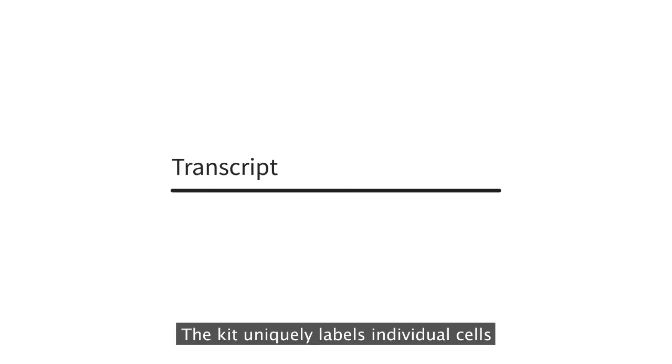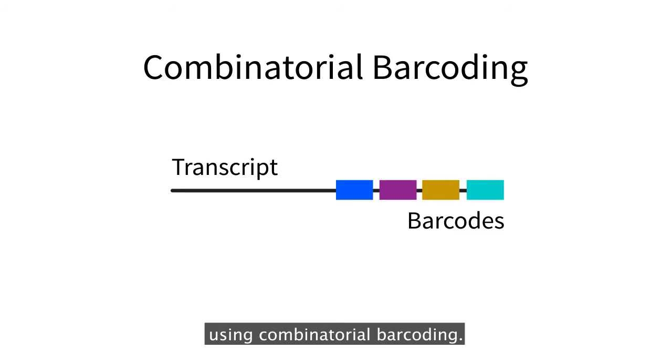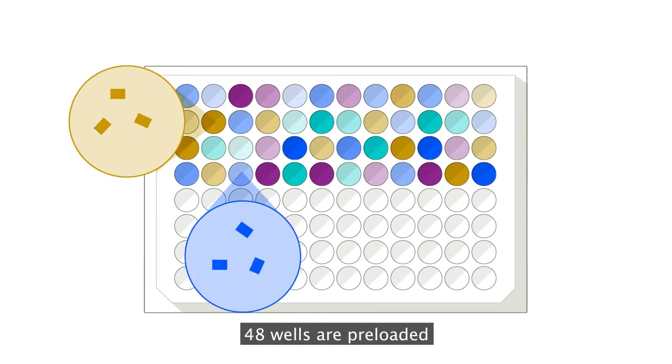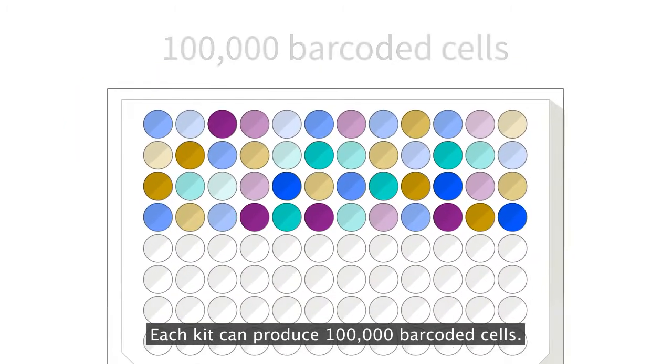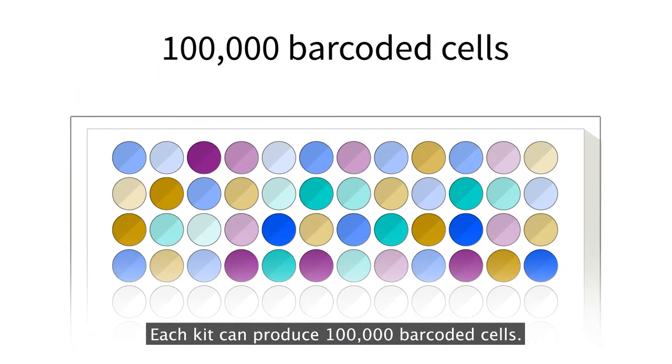The kit uniquely labels individual cells using combinatorial barcoding. 48 wells are preloaded, each containing a well-specific barcode. Each kit can produce 100,000 barcoded cells.